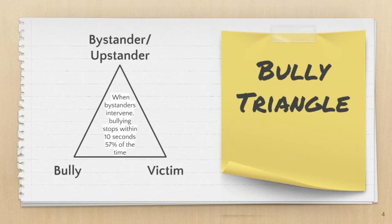The more common term we are trying to teach students about today is an upstander rather than a bystander. We want students to know that it is okay to speak up and intervene in a bullying situation. It is important to know that bullying behaviors stop 57% of the time within 10 seconds of an upstander speaking up for a victim. This is crucial when we think about how a small gesture can have such a powerful effect on both the bully and the victim.